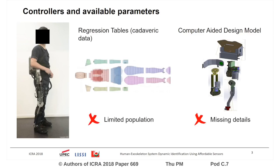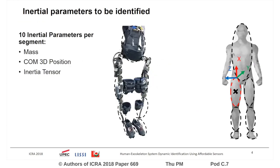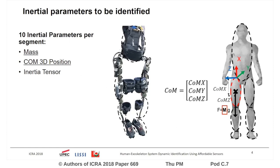However, in both cases, there are many limitations, and so the inertial parameters are not accurate enough. In this context, our goal is to develop an identification method of the mass, the center of mass 3D position, and the six components of the inertia tensor for each link of the human body and the lower limb exoskeleton models.